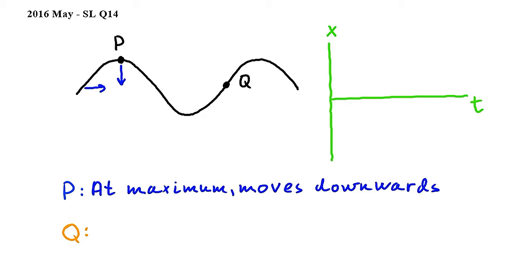Based on this we can now draw the graph for P. So we know that it starts at its maximum and moves downwards, hence the graph for P looks like this. Let's look at Q now. Q is halfway between the maximum and the minimum point on the wave.